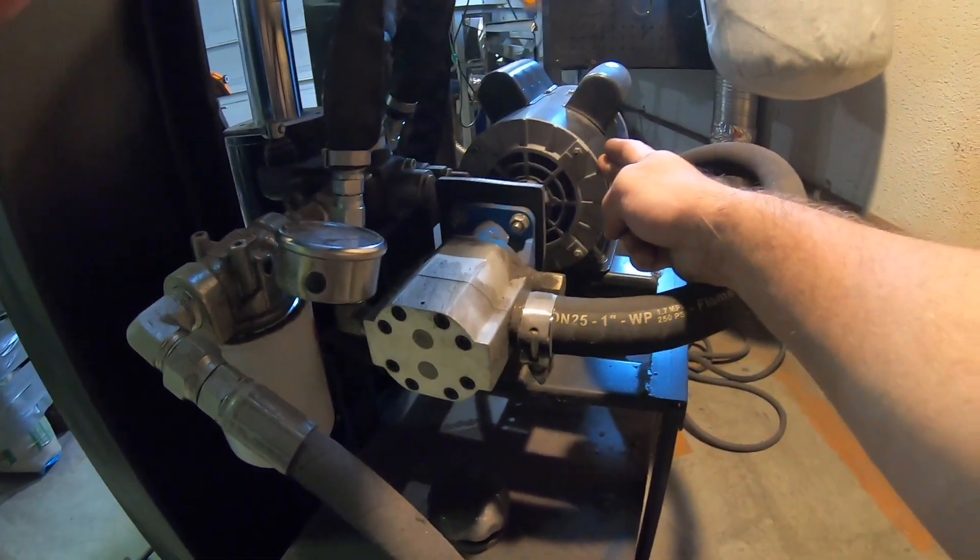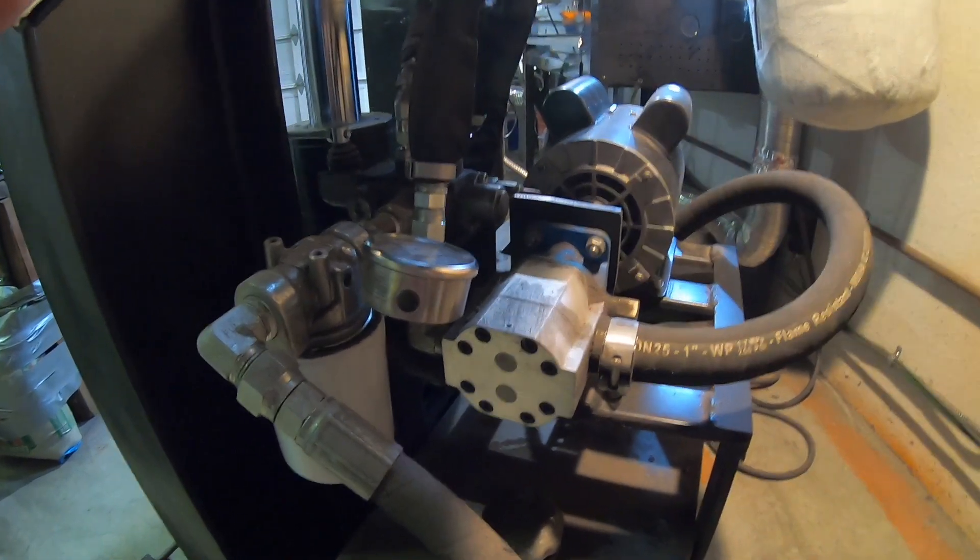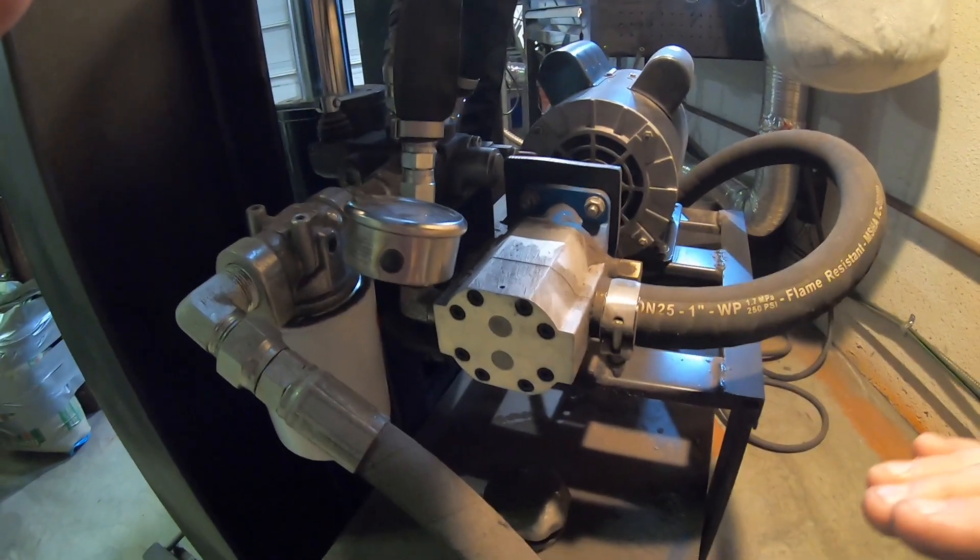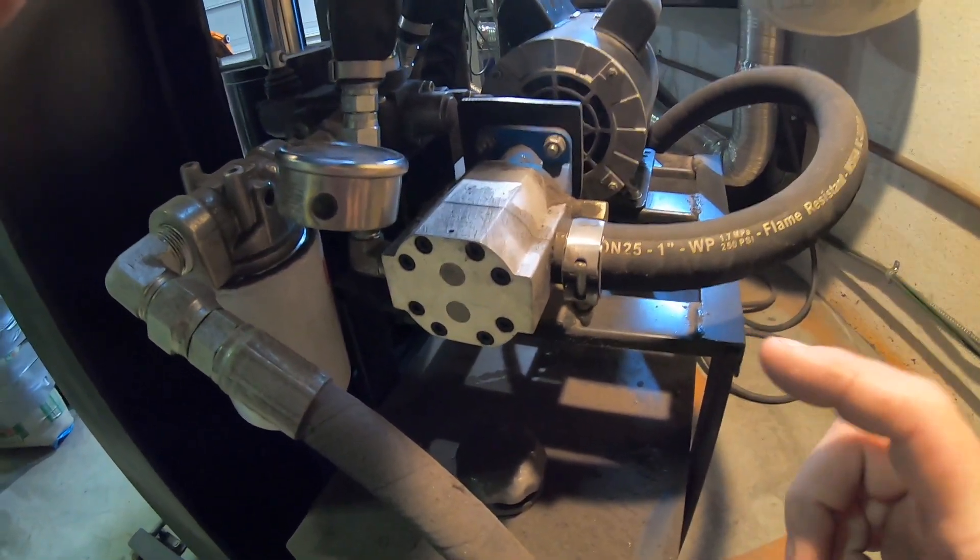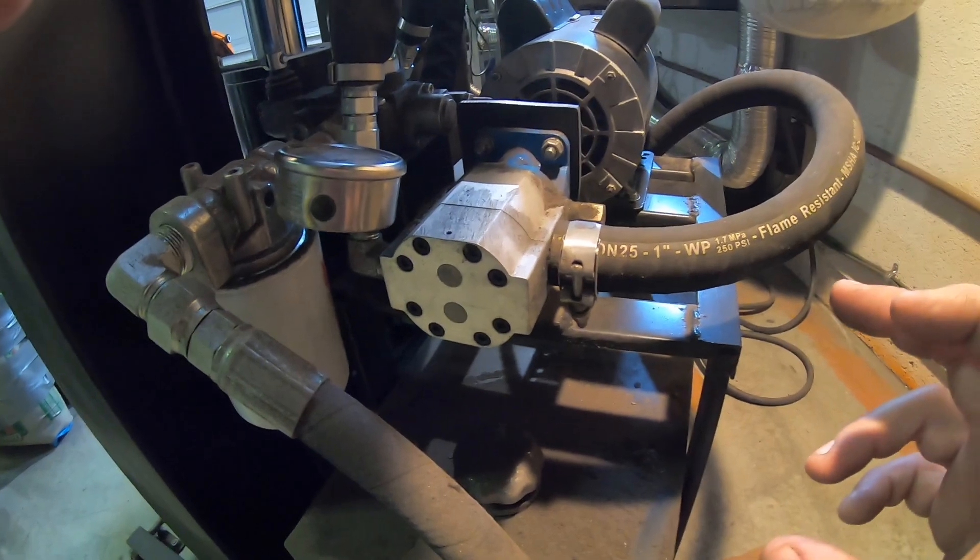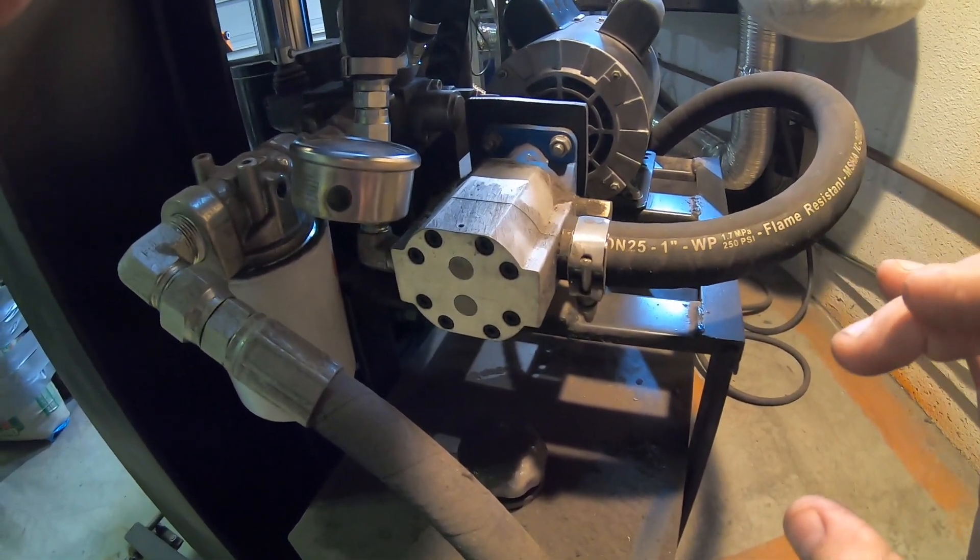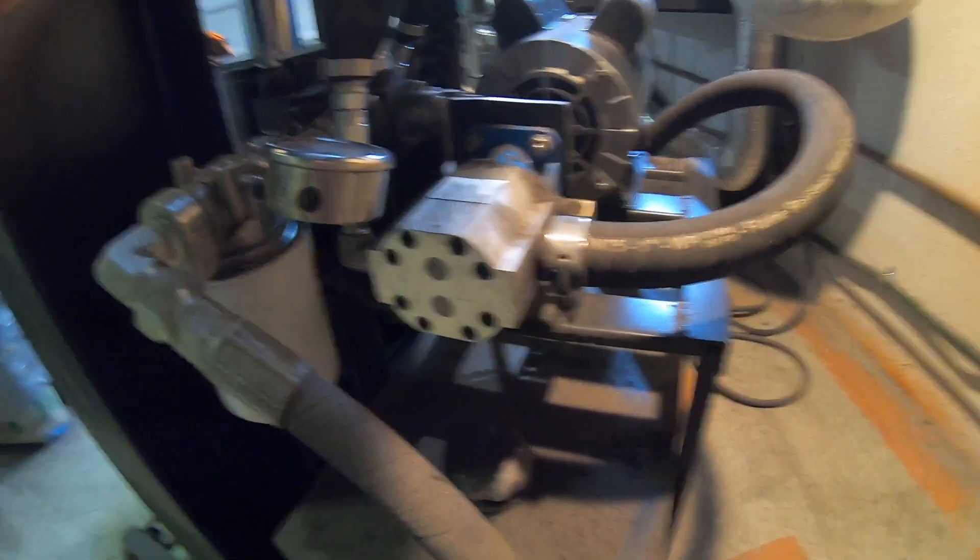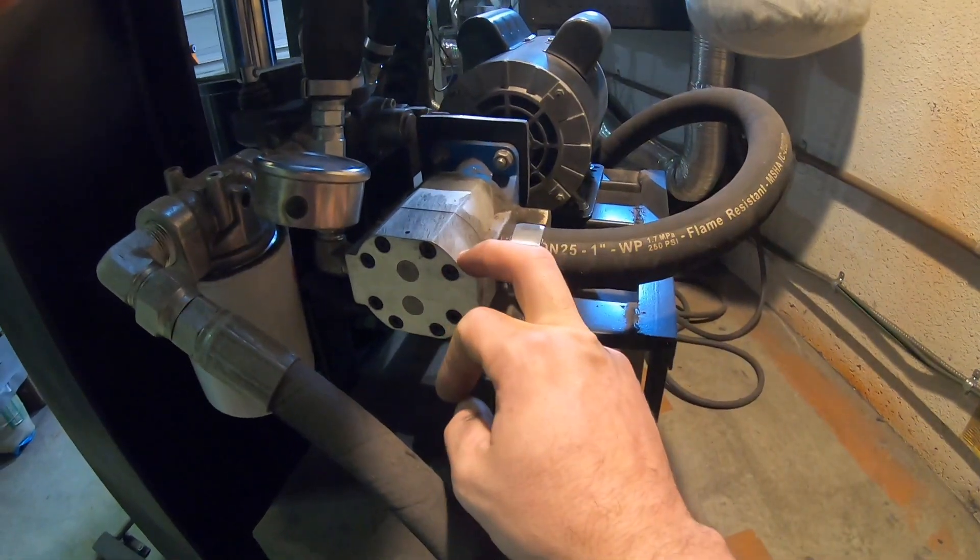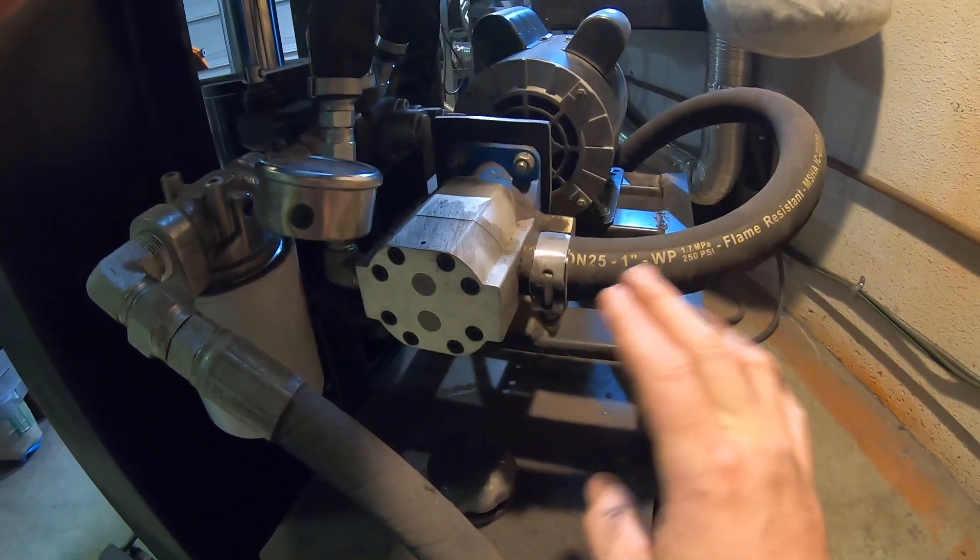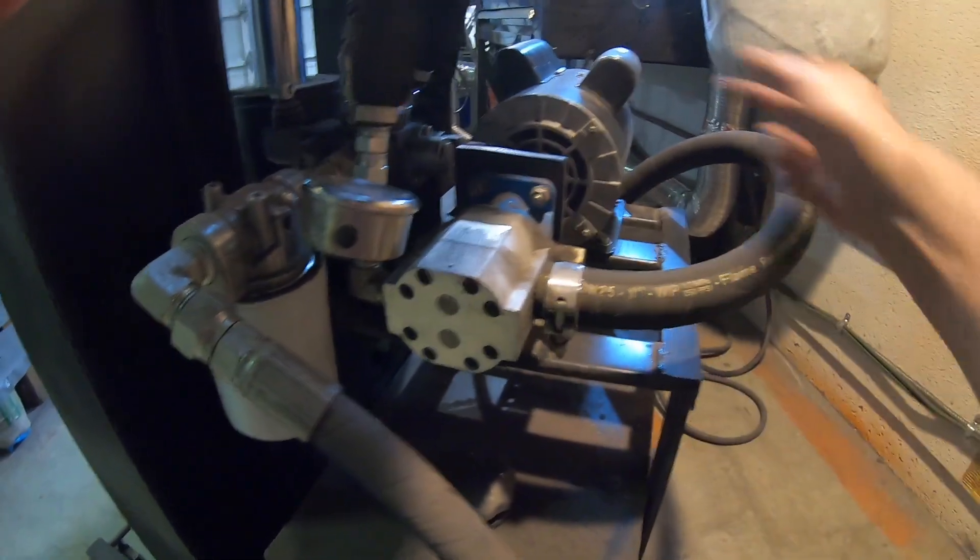Then you got a pump. So this is a 13 gallon per minute pump and then a five horse motor. The reason you want such a big motor for these, you really want the speed of the head to move a couple of inches a second. When I turn this on and show you, you'll see that it moves pretty quick and that's what you want. You don't want one that crawls because it's just going to take longer to press and it's going to take you more heats to do things.